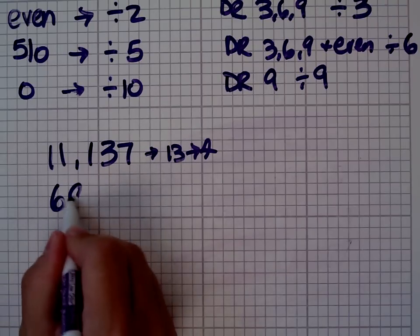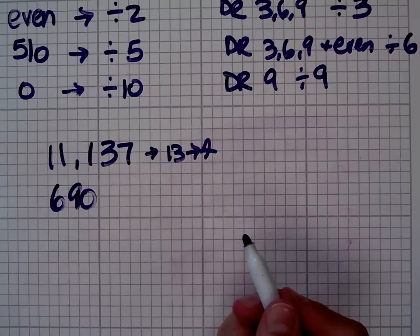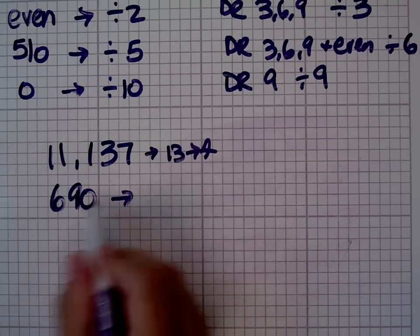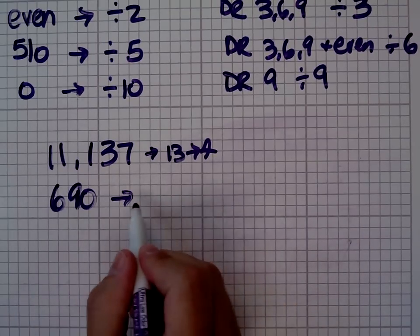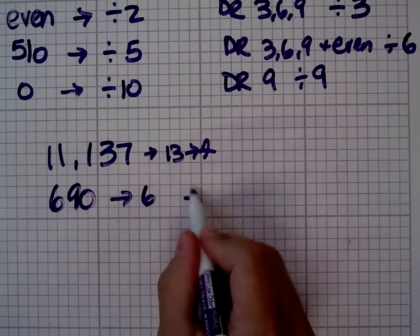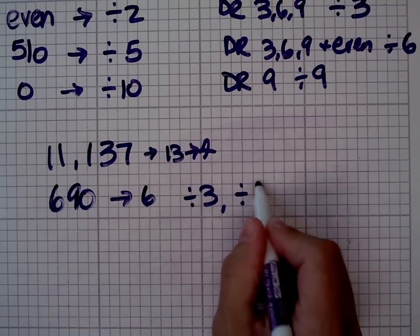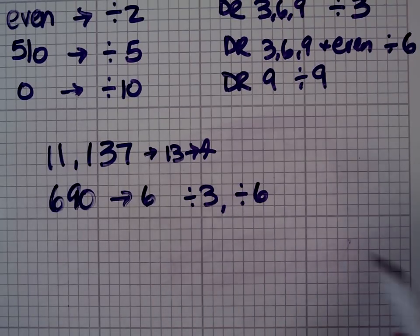How about 690? Off the top of my head I'm going to find out the digital root. 6 plus 9, 15, 1 plus 5, 6. It is divisible by 3. It is divisible by 6. And it is not divisible by 9.